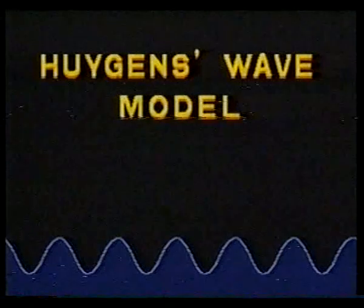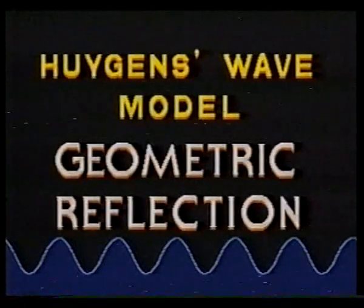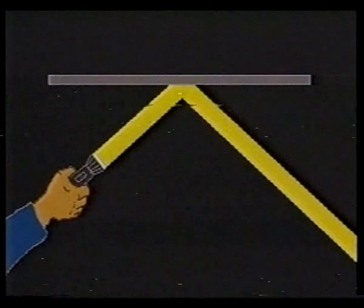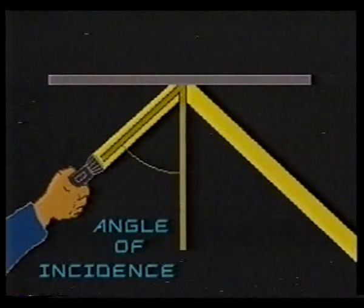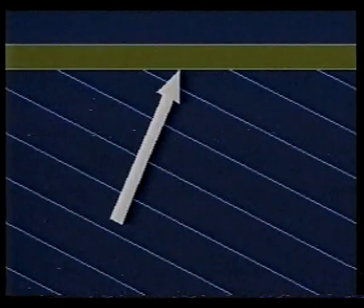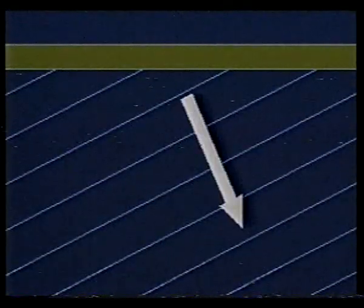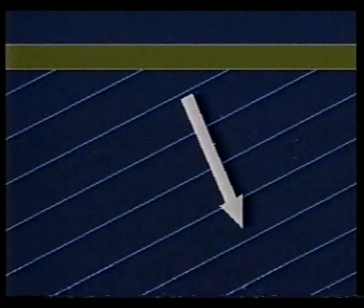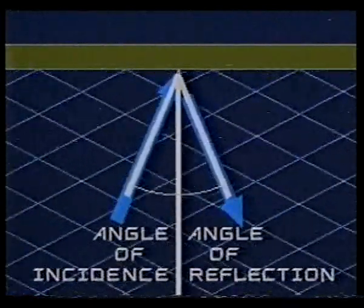Huygens used waves to explain several other behaviors of light, including geometric reflection. When a mirror reflects a light beam, the angle of incidence always equals the angle of reflection. Water waves behave the same way, although their behavior can appear confusing. Note the direction of propagation to the wall and away from it — the angle of incidence is equal to the angle of reflection.